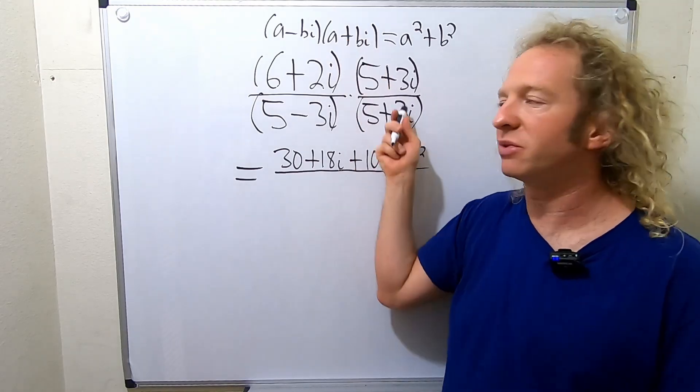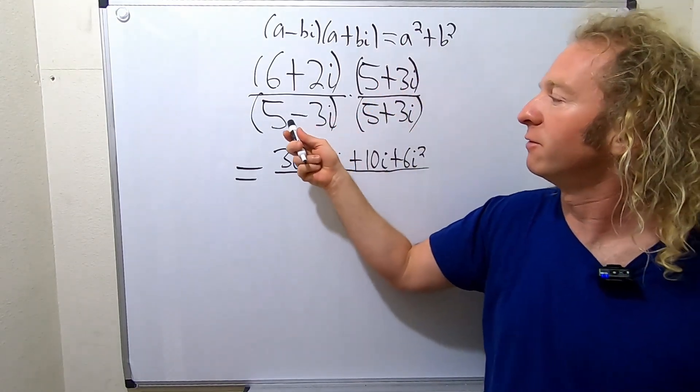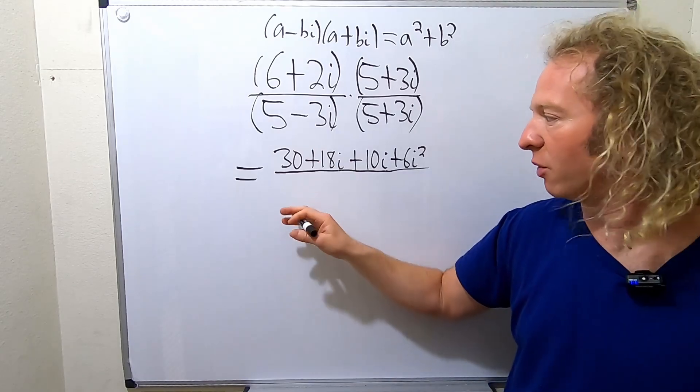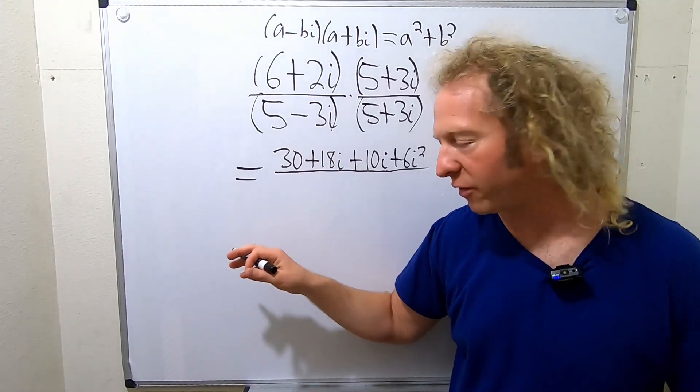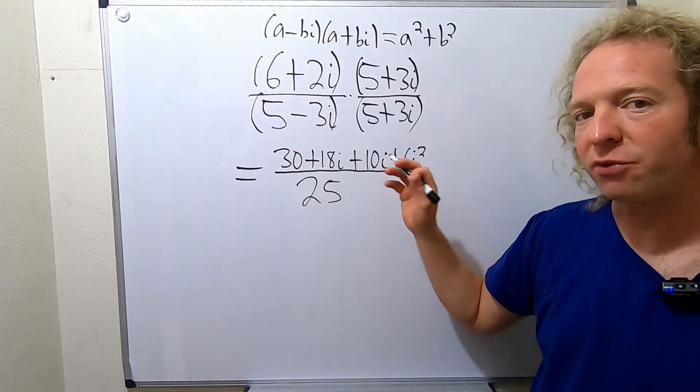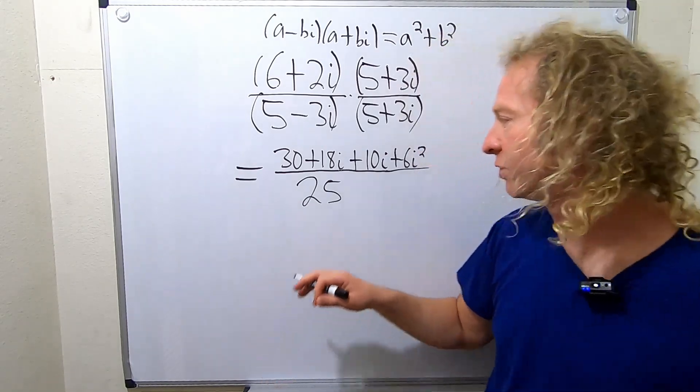So it'll be a squared plus b squared. So it'll be 5 squared plus 3 squared. So 5 squared is 25, and 3 squared is 9, so plus 9.